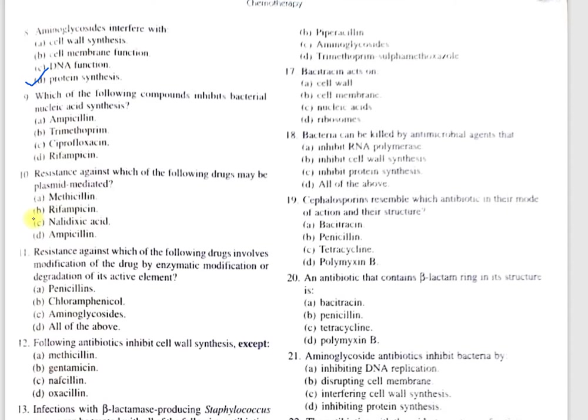Question number 9: Each of the following compounds inhibits bacterial nucleic acid synthesis — option A, ampicillin; B, trimethoprim; C, ciprofloxacin; D, rifampicin. The correct answer is C, ciprofloxacin. Ciprofloxacin is bactericidal in nature. It is a fluoroquinolone drug which inhibits bacterial DNA. Another example of an antibiotic in this class is nalidixic acid.